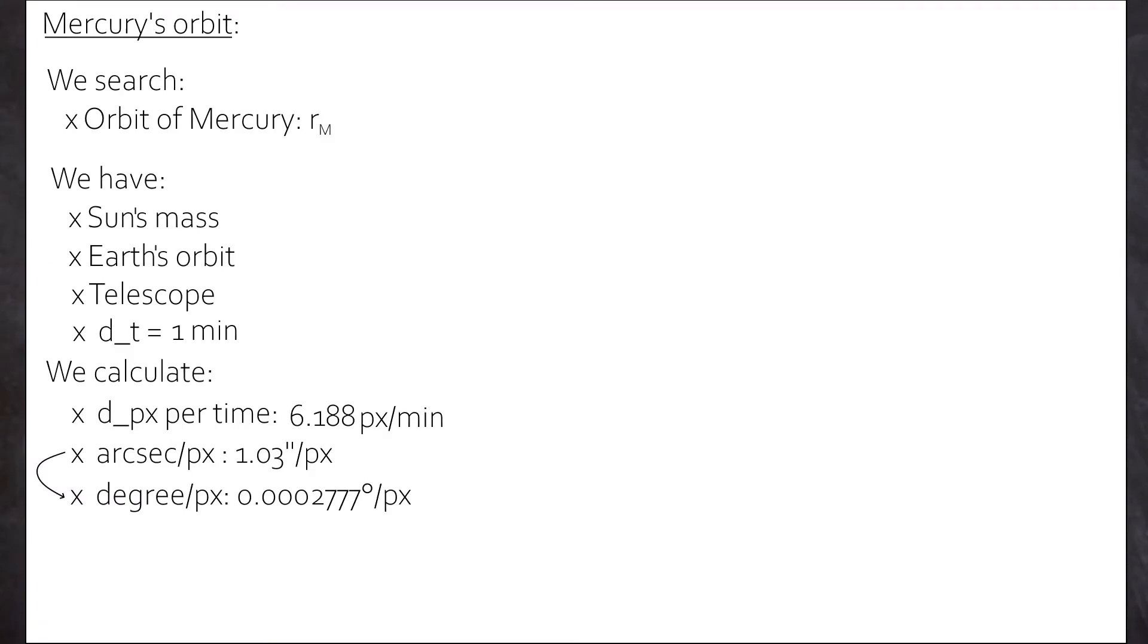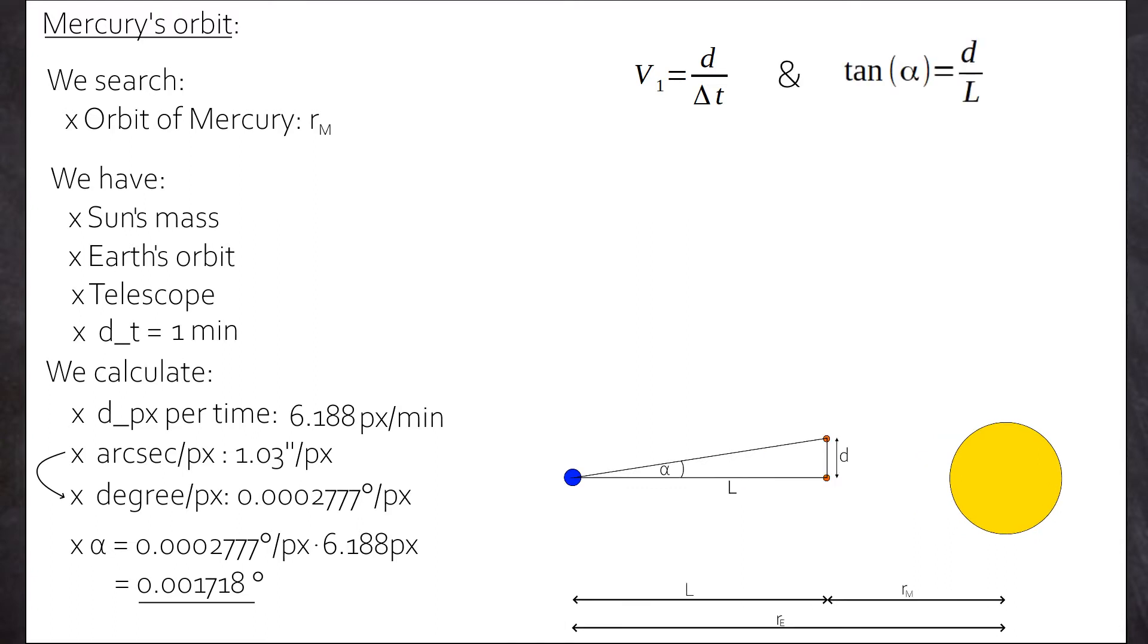So let's put this as an equation. Velocity v equals d divided by delta t. Just how far and which time. And so, given that triangle, we know from school, tangent alpha equals d divided by distance Earth-Mercury. Let's call this l. So then d equals tangent alpha times l. And so our equation is now velocity v equals tangent alpha times l divided by delta t.